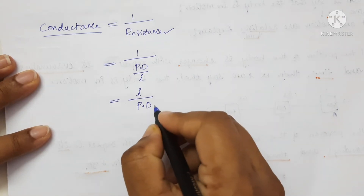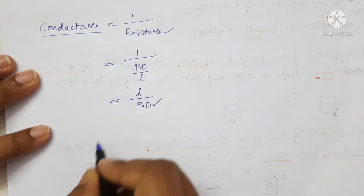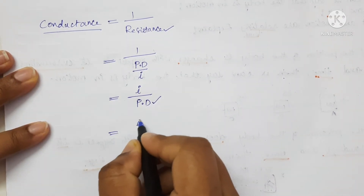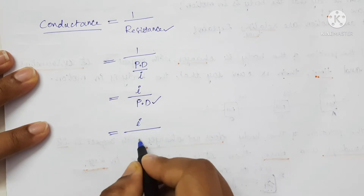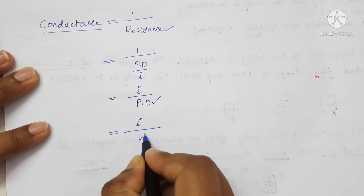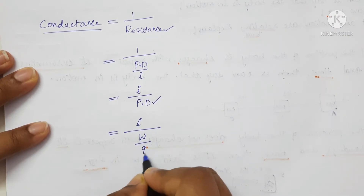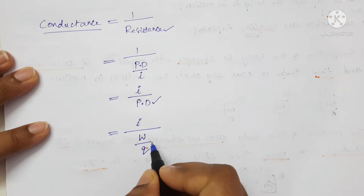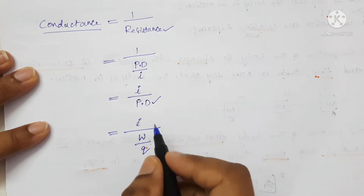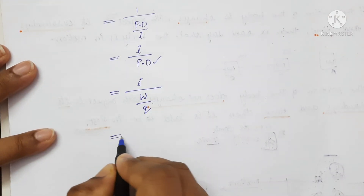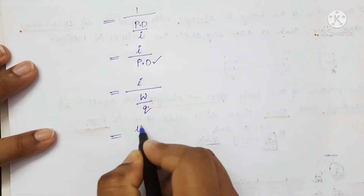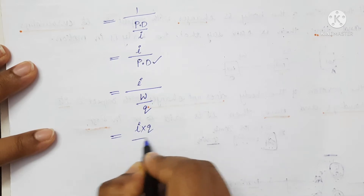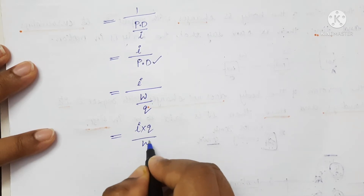Now, write the formula for potential difference. That is, work done upon charge. This is the formula for potential difference. Now, simplify this to get I into Q by work done.